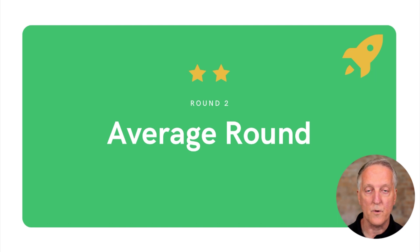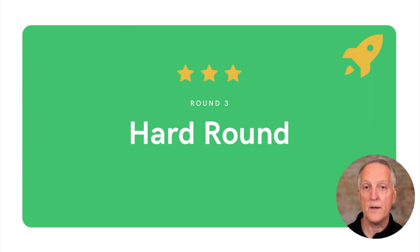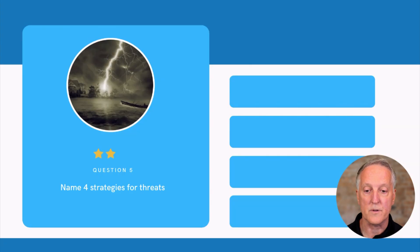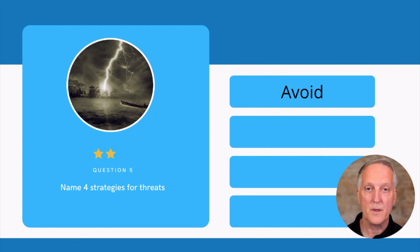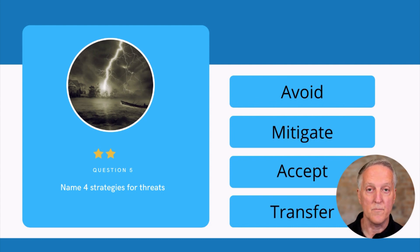That day we'll have easy questions, then an average round, and then some tougher questions in the hard round. For example, I might ask: name four strategies for threats. One would be avoid — we could avoid a threat. Could you name three more? The other three strategies are: mitigate, accept, or transfer the risk.